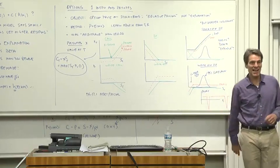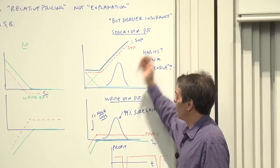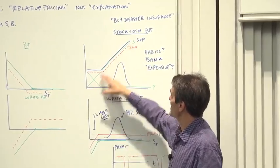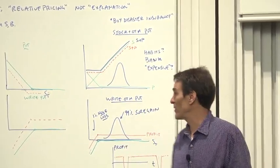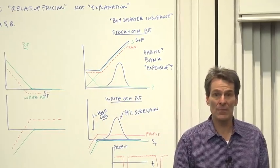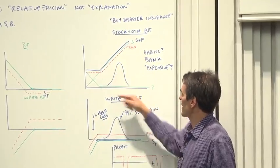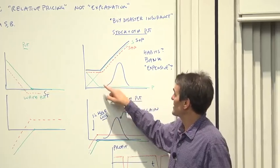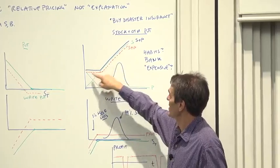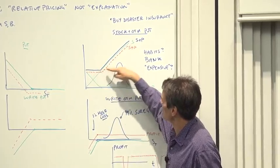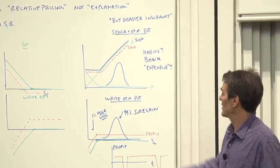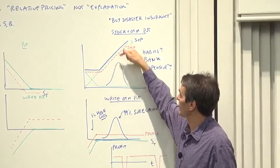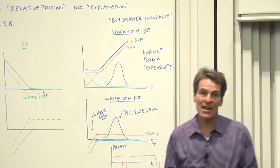The first one is buying disaster insurance. Suppose you are a bank or a big investor holding the stock — green is S, that's your payoff from holding a stock portfolio. But you're worried about what happens if stocks go down. Let us think about buying a stock and also buying a put option — it's called a protective out-of-the-money put option. Your total payoff is now this hockey stick line. You still have the stock, but if things go terribly, you've capped your losses. Of course, that costs you something — you have to pay for that put option.